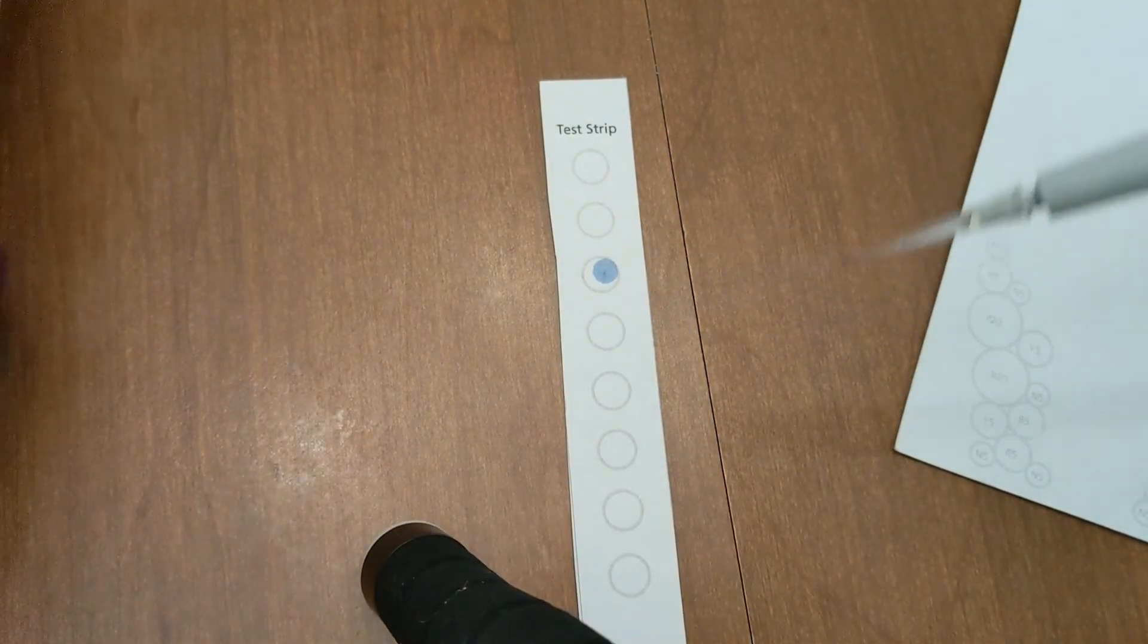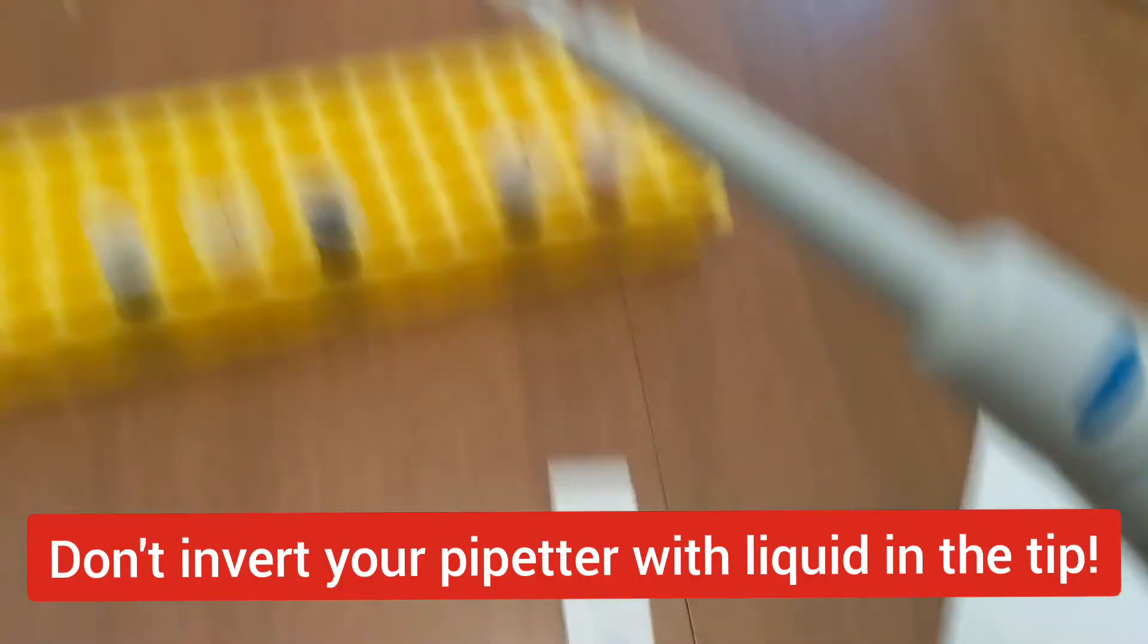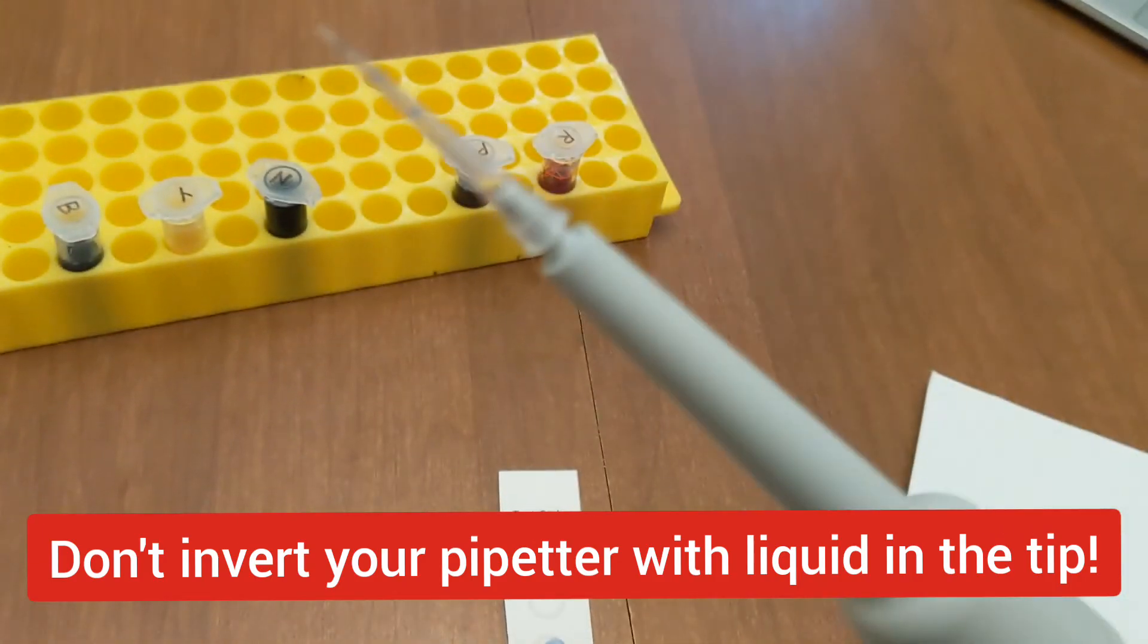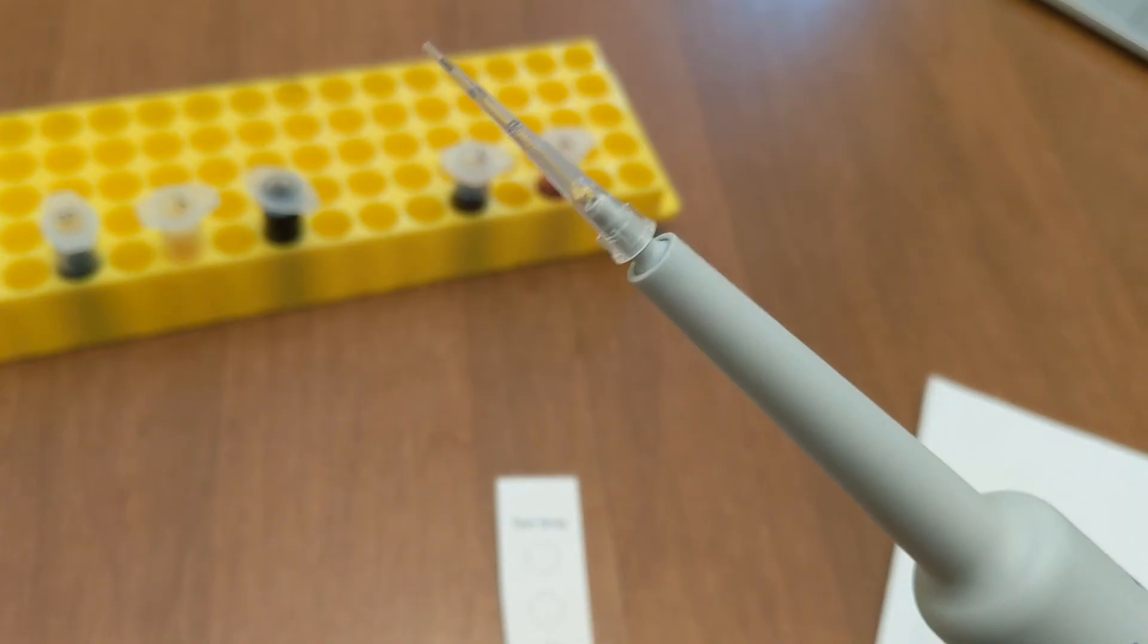And the third rule is when you have liquid in your tip, never invert your micropipette. Don't flip it this way because the liquid can then go into the shaft of the pipette and contaminate it.